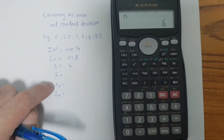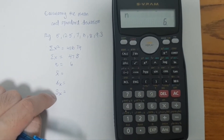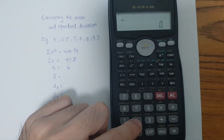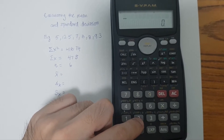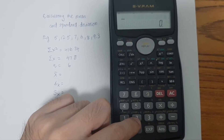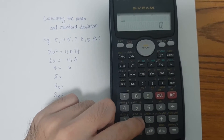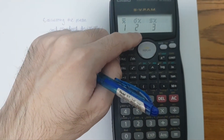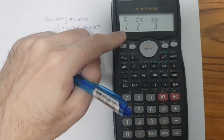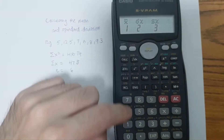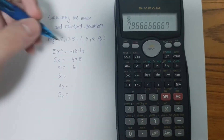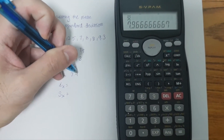To calculate the sample mean, the population standard deviation, and the sample standard deviation, we click Shift and the S-VAR button — number two. This brings up the option to calculate either the sample mean, the population standard deviation, or the sample standard deviation. We press one for the sample mean, which gives us 7.97.